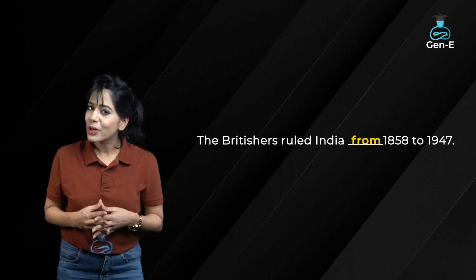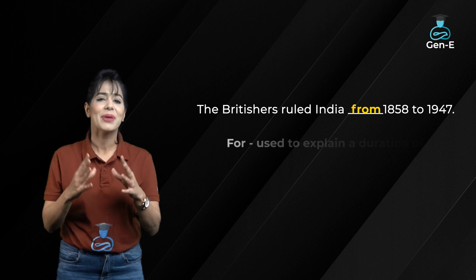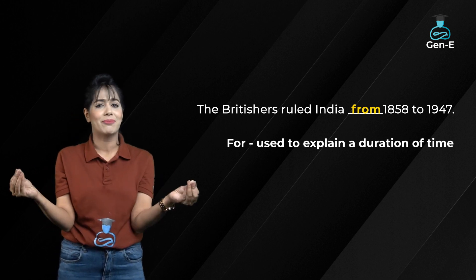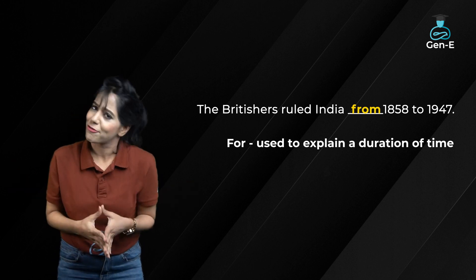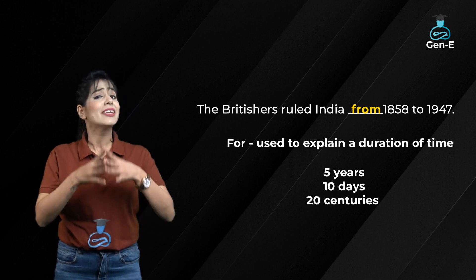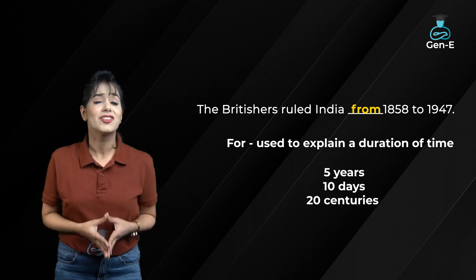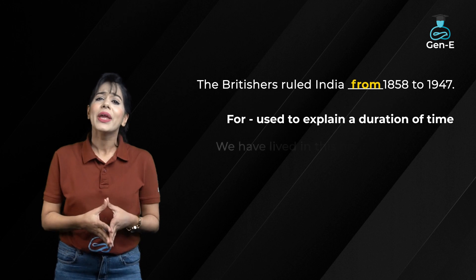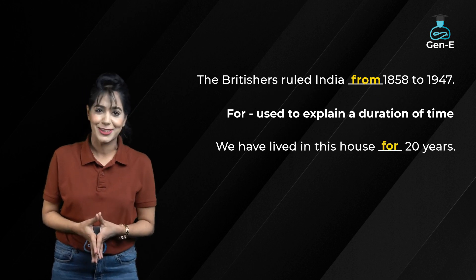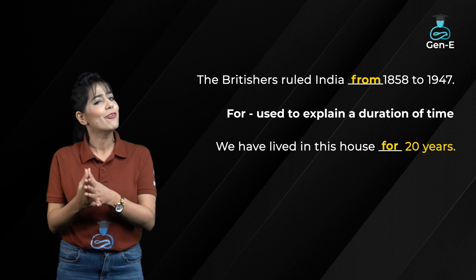But what about the word for? For is basically used to explain duration of time — jaisay 5 years, 10 days, 20 centuries. Yeh sab duration dikha rahe hai. Jaisay, we have lived in this house for 20 years. Duration hai, is liye for.